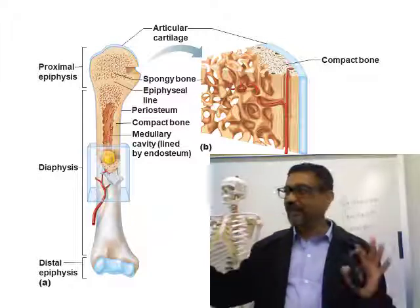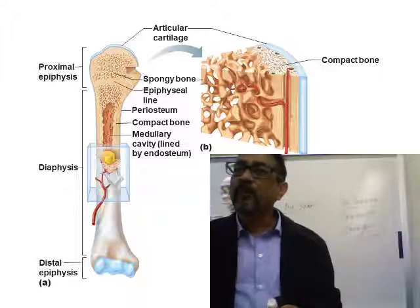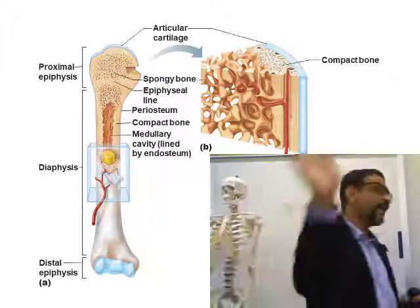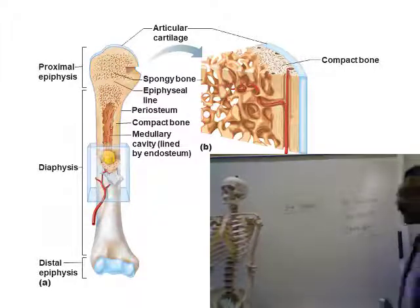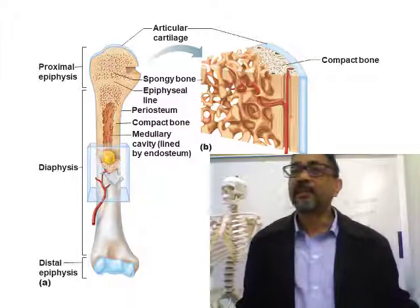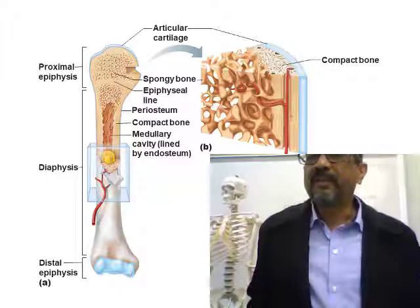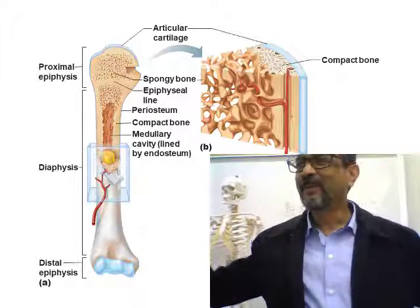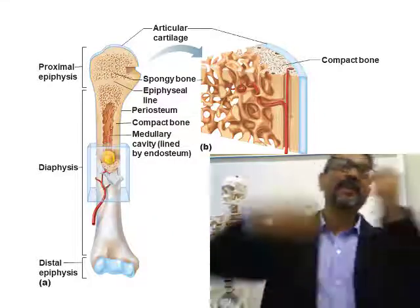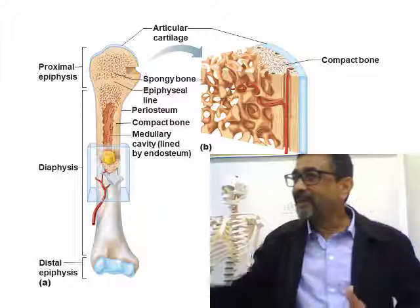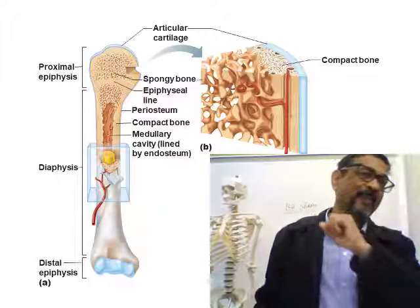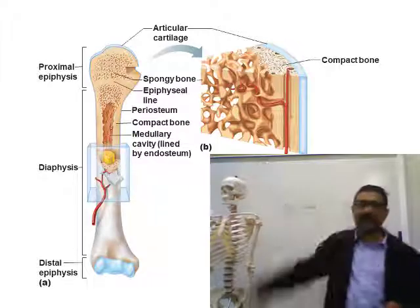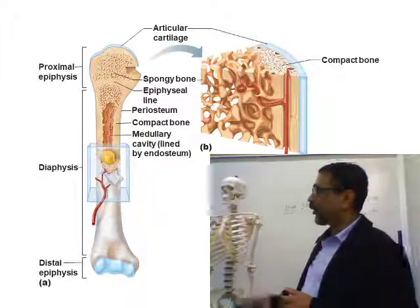The red bone marrow inside the medullary cavity becomes yellow bone marrow, but the red bone marrow inside the spongy bone remains red throughout life. In very early life, blood cells are produced everywhere inside the bone, because red bone marrow is everywhere — in the medullary cavity and inside the spongy bones. In adults, blood cells are produced only where spongy bone is found: the ends of long bones and inside flat bones.